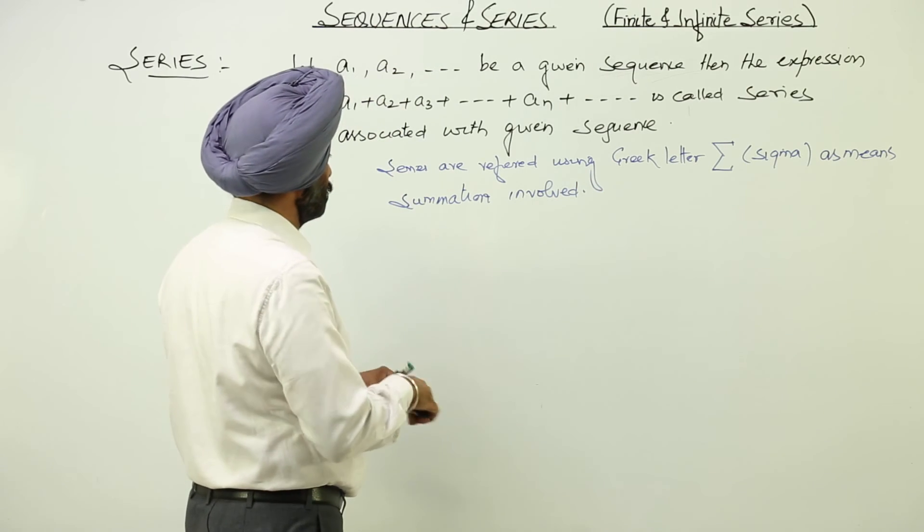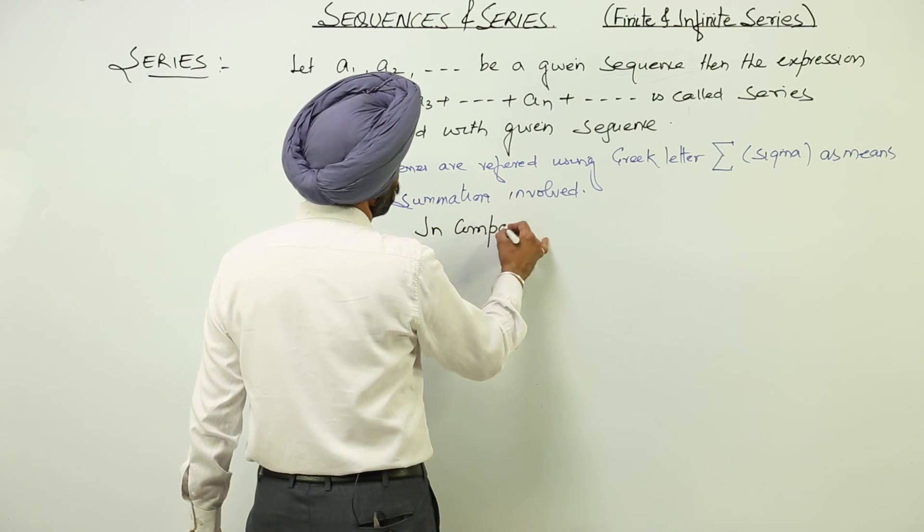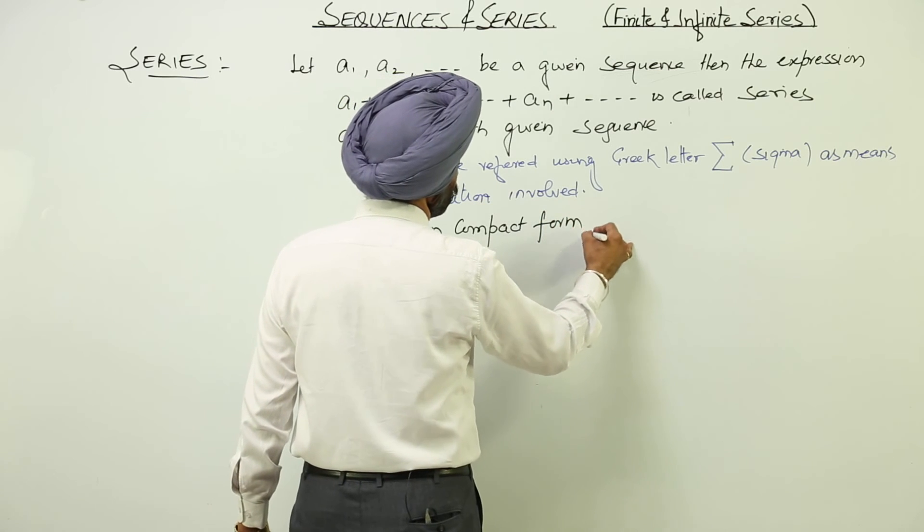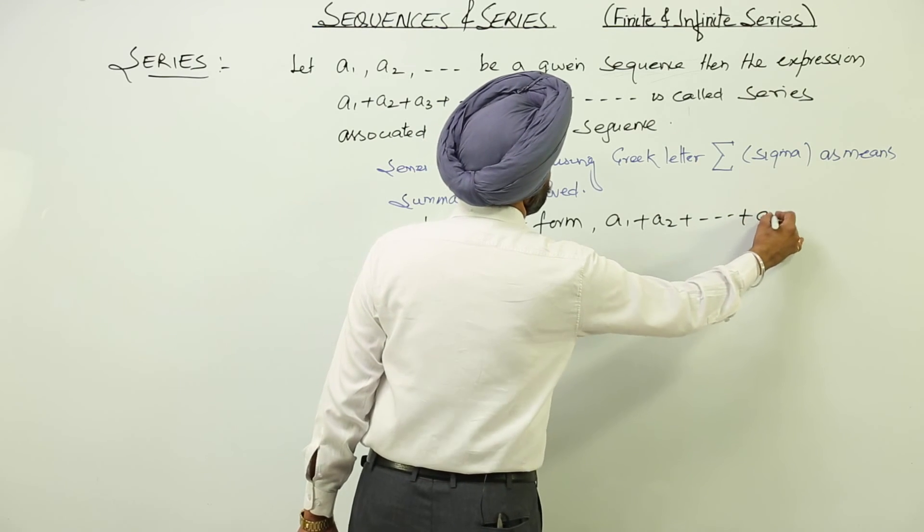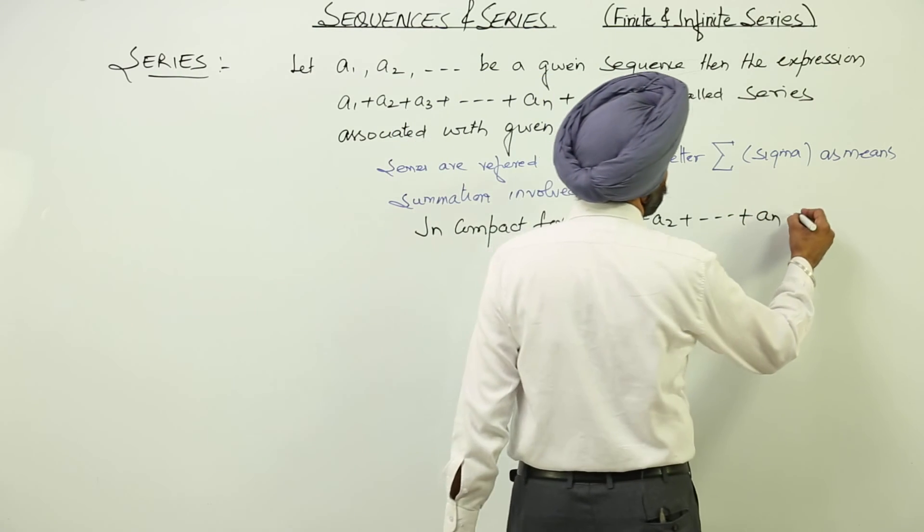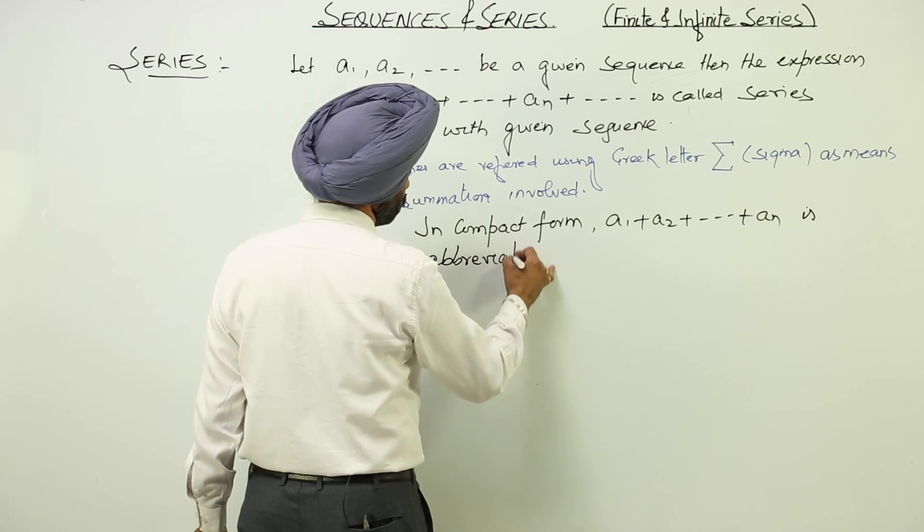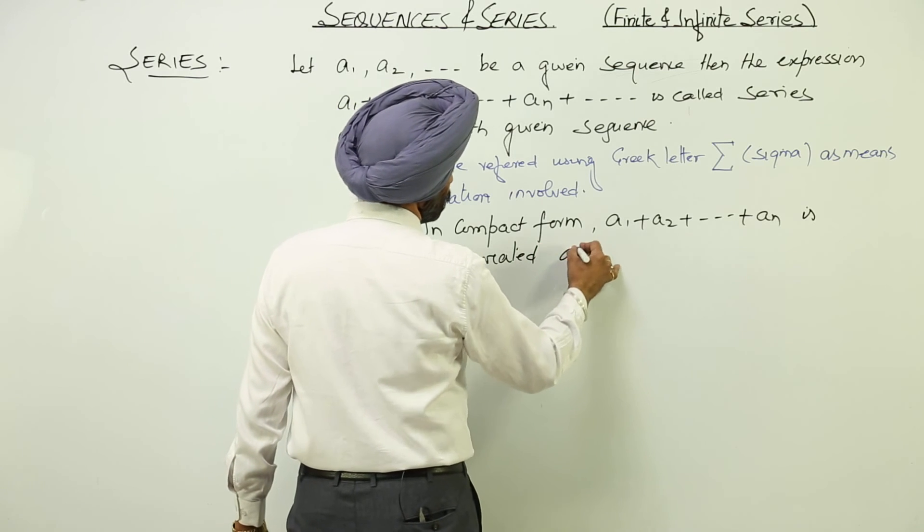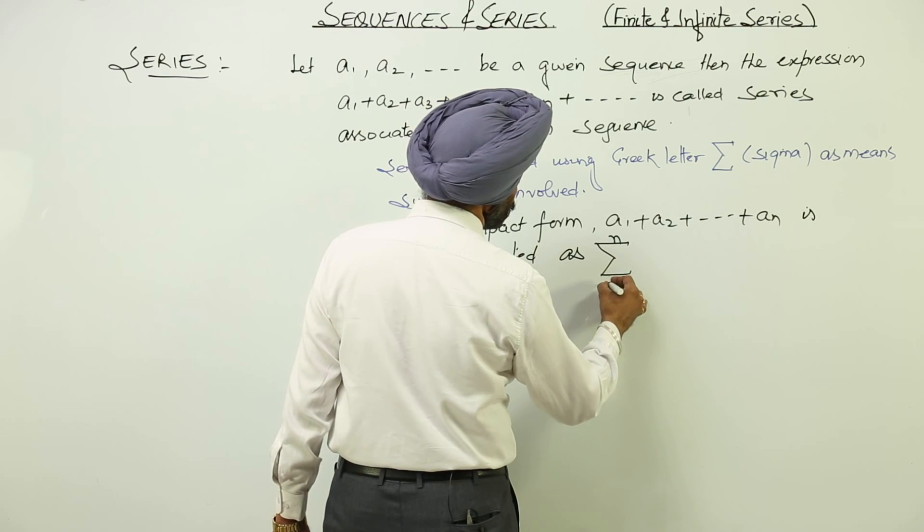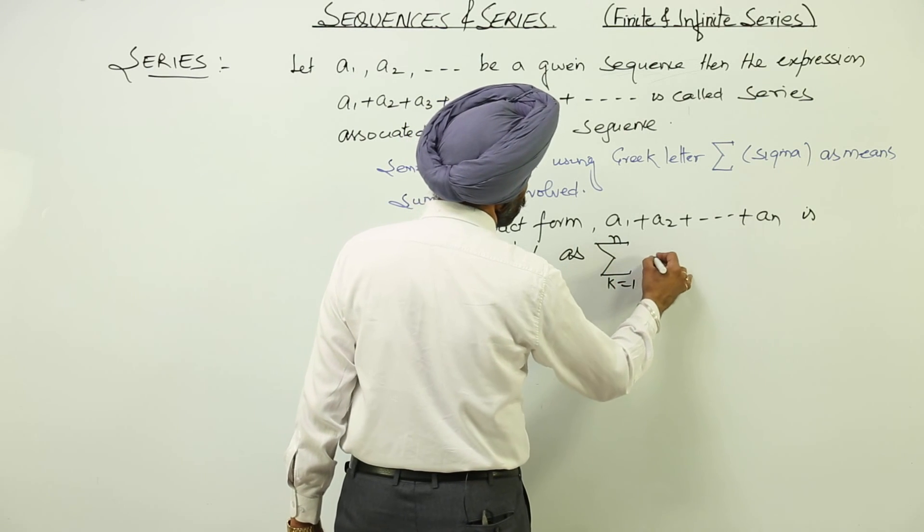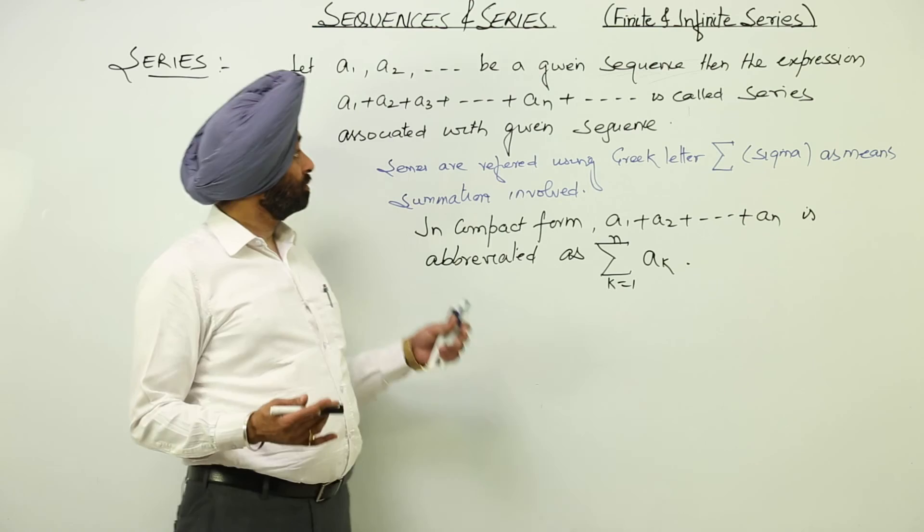Now in compact form, if we are writing A1 plus A2 plus AN, it is abbreviated as summation from k equals 1 to n of A_k. This is all about the series.